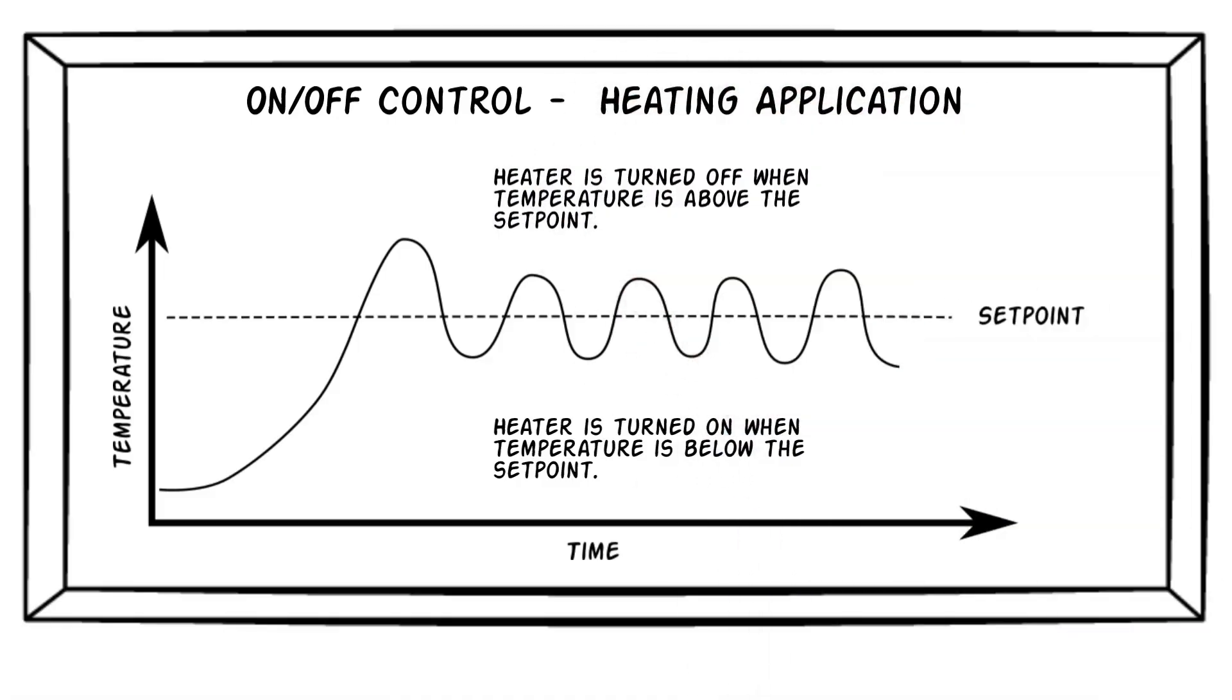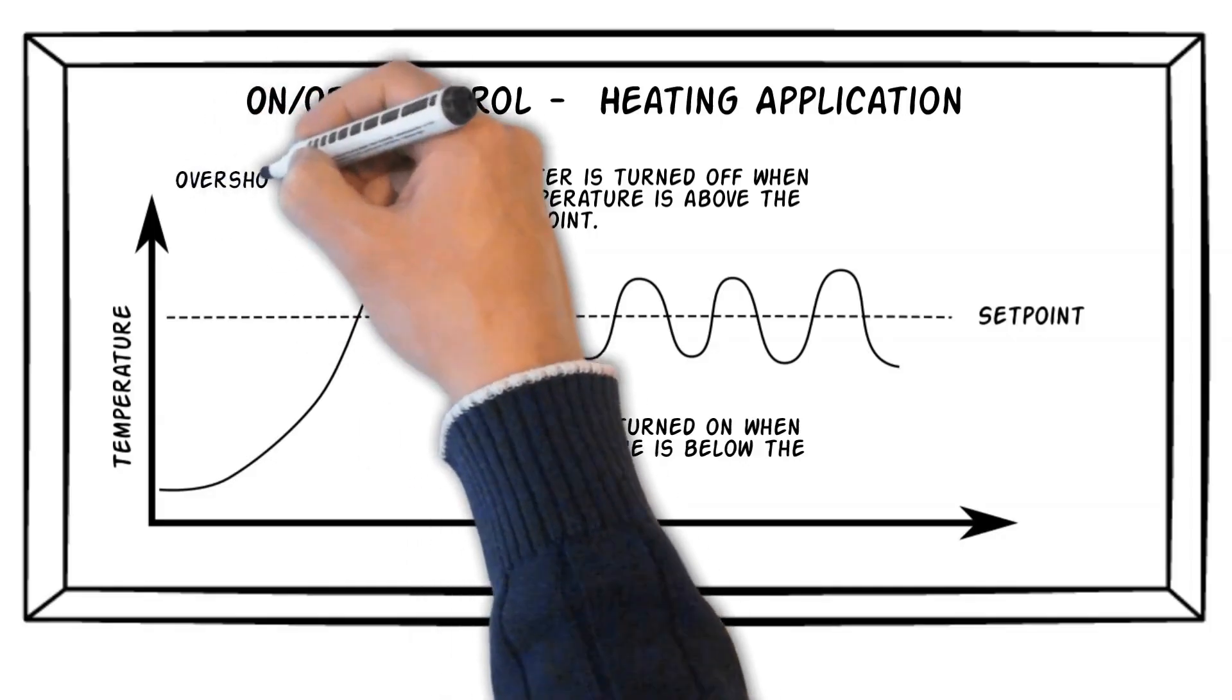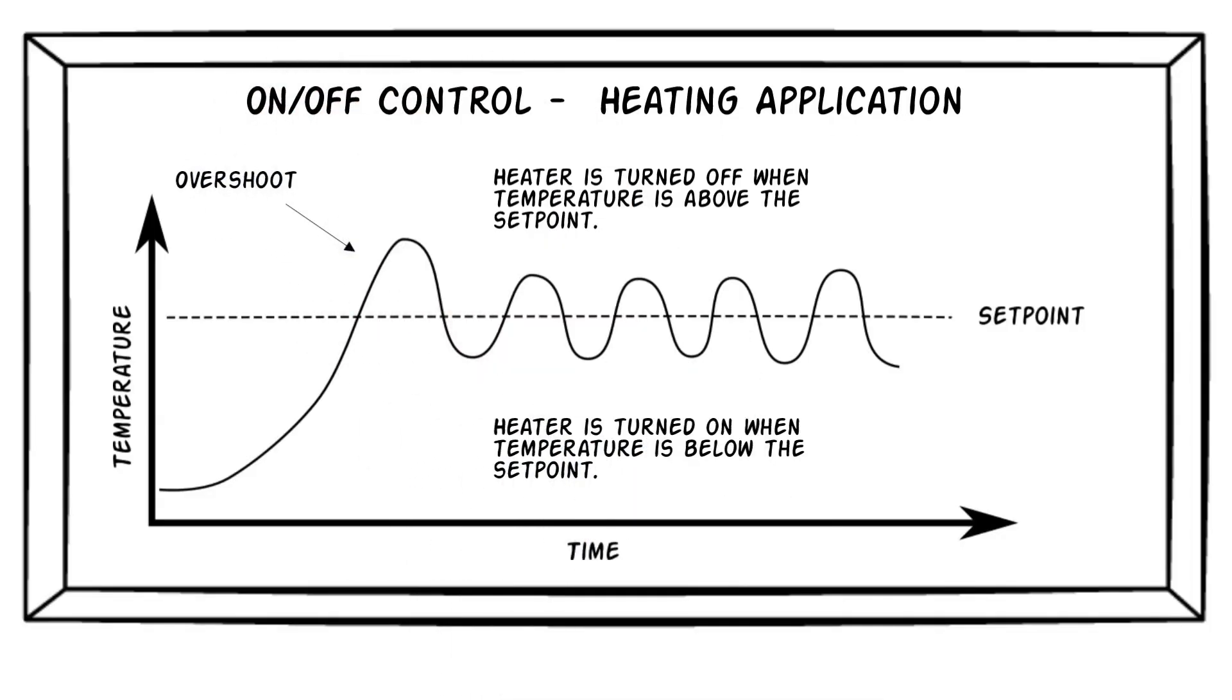This is a very simple type of control, but it tends to result in overshoot, in which the temperature initially overshoots the set point. After the overshoot, the temperature will normally settle around the set point, but with oscillations that fluctuate above and below the set point.